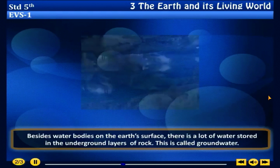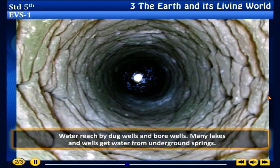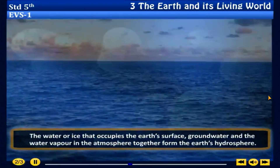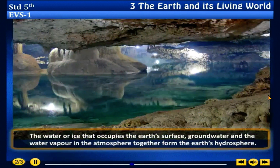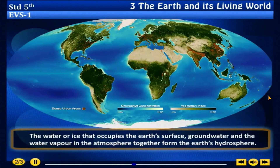Groundwater: besides water bodies on the earth's surface, there is a lot of water stored in the underground layers of rock. This is called groundwater. It is reached by dug wells and bore wells. Many lakes and wells get water from underground springs. The water or ice that occupies the earth's surface, groundwater and the water vapor in the atmosphere together form the earth's hydrosphere.